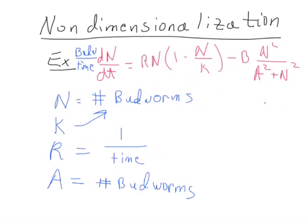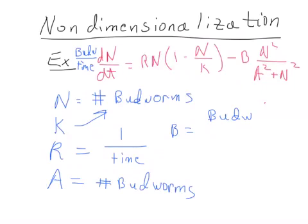Now you have budworm squared divided by budworm squared, so this fraction has no units. Since dn/dt has units of budworms per time, and we're subtracting terms, this whole term must also be budworms per time. Since the fraction is unitless, b must have units of budworms per time.